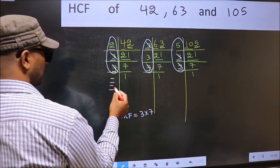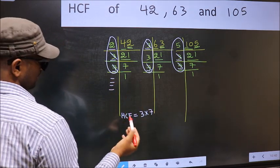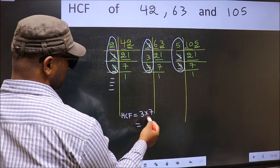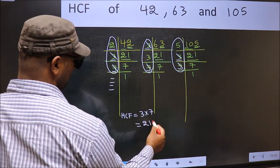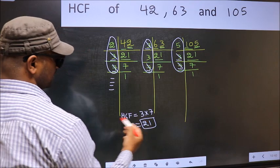No more numbers have been left out. So our HCF is 3 into 7, 21 is our HCF.